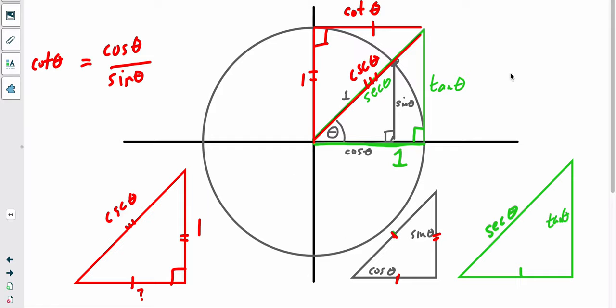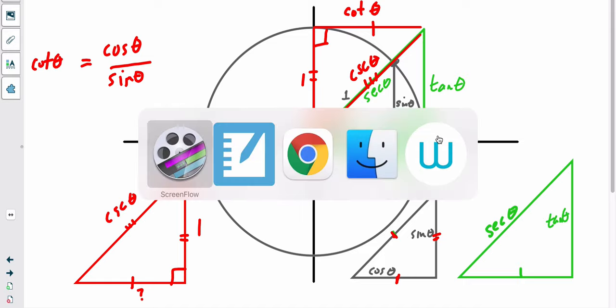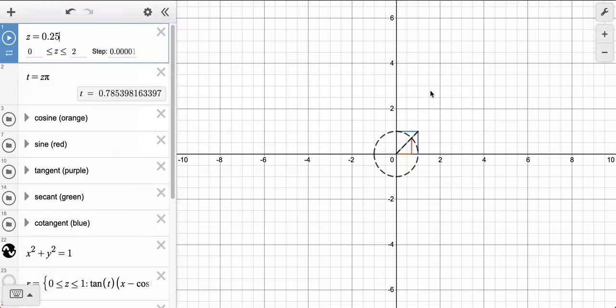Okay, so now we have a model. We have our functions labeled, we've constructed it. Now what we want to do is use this model to understand the behavior of this line, which is the tangent of theta. Let's go to Desmos to do that.